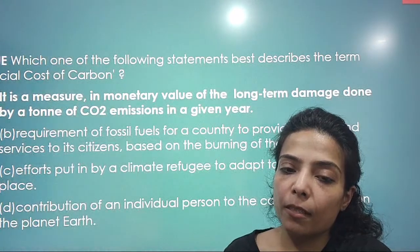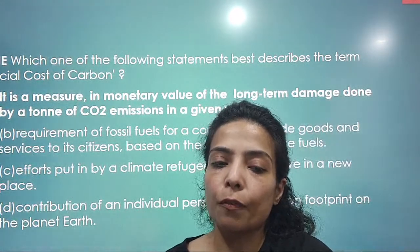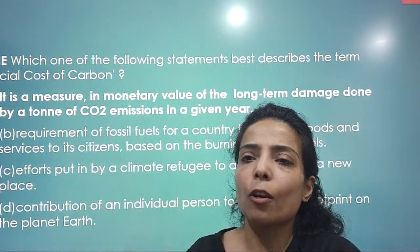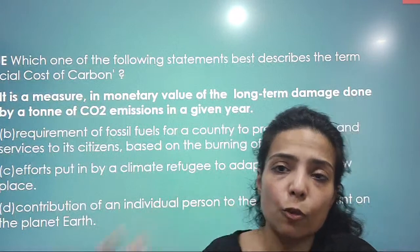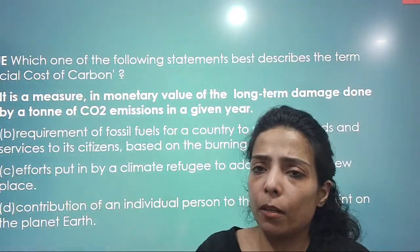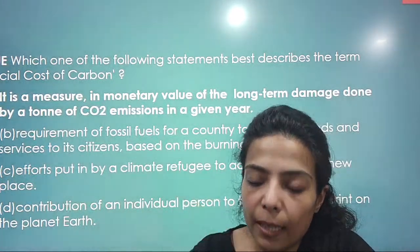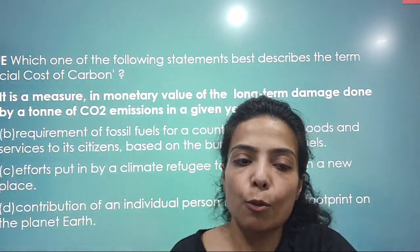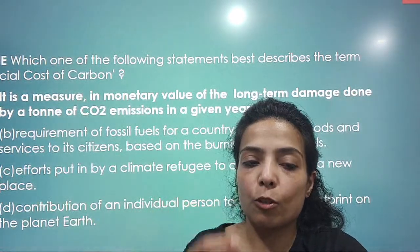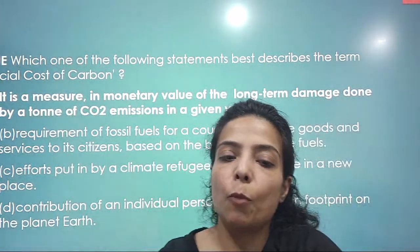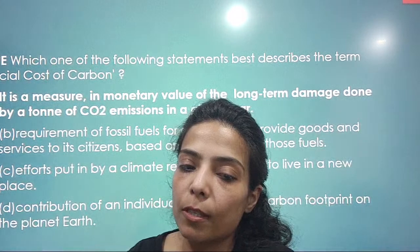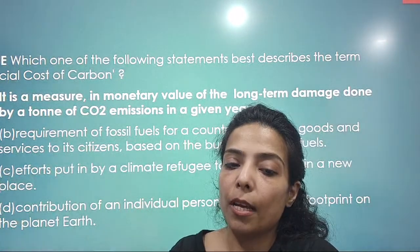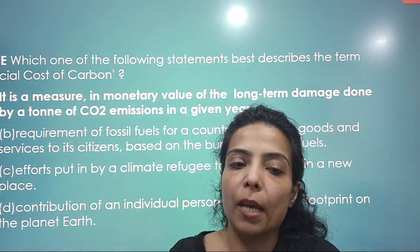Which of the following statements best describes the term 'social cost of carbon'? There is an economic cost — the money you have to spend. Otherwise you are causing damage due to environmental degradation. The social cost refers to the effect on your daily life and the long-term damage caused by carbon emissions. It is a measure in monetary value of the long-term damage done by a tonne of carbon dioxide emissions in a given year. That is what we call the social cost of carbon.